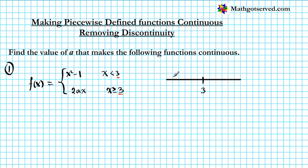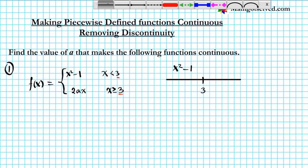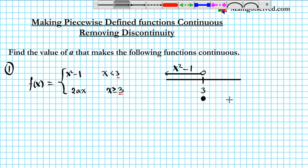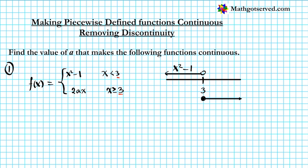On the left side we have the function x squared minus 1, going all the way to 3 with an open circle — so anywhere less than 3 the function assumes this value. On the right side, starting with a filled circle, we have the function 2ax. If we pick the appropriate value of a, this function will flow smoothly from one piece to the other without any jumps.